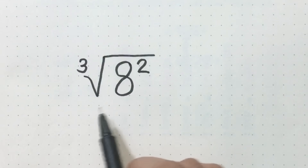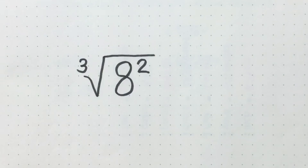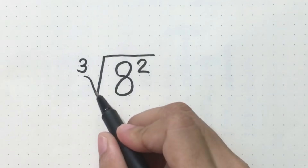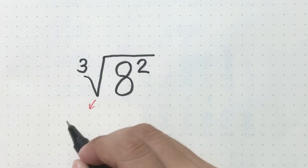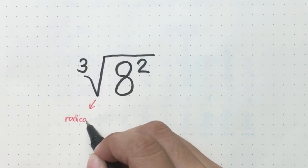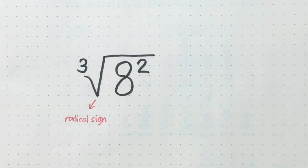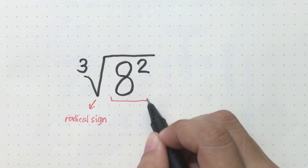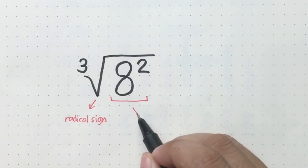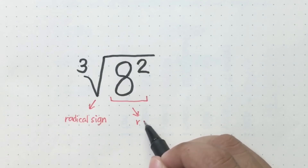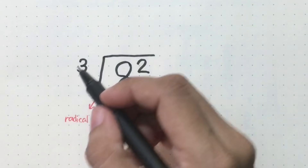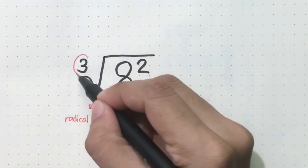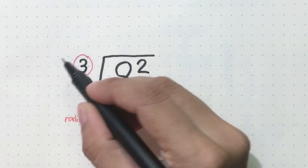A radical expression has three parts. This symbol, we call it the radical sign. The number inside, we call it the radicand. And the number beside the radical sign, we call this one the index.